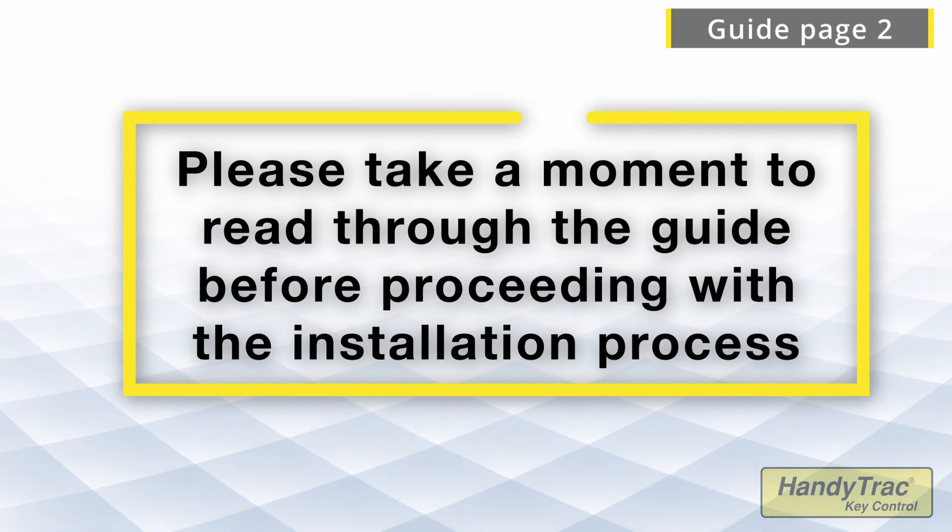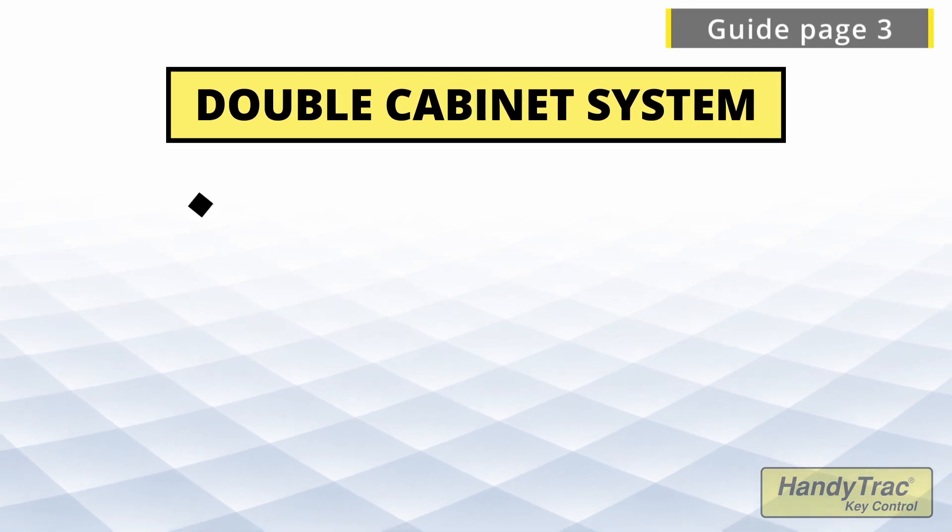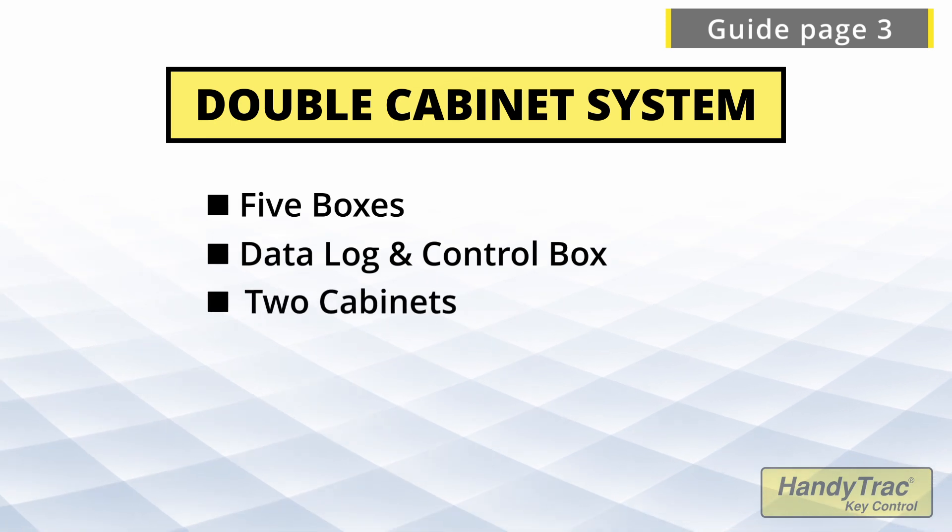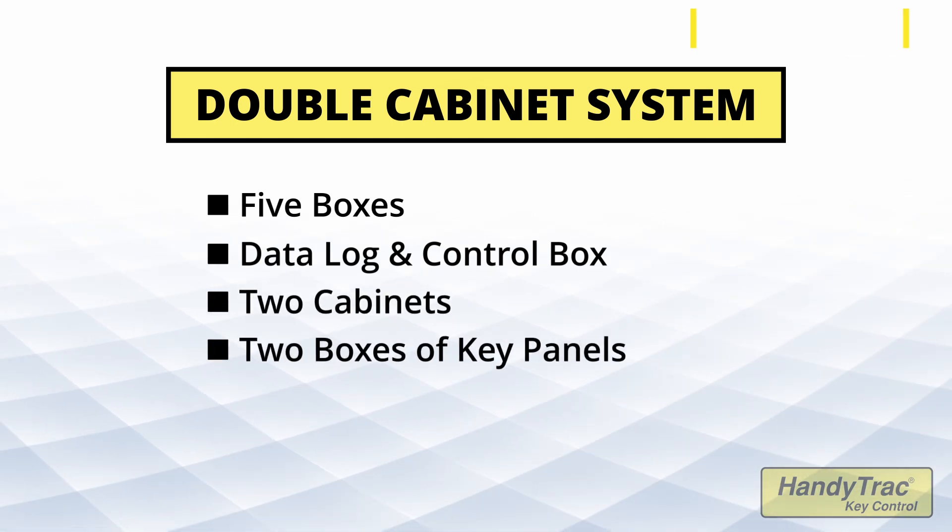Please take a moment to read through the guide before proceeding with the installation process. A double cabinet system would include five boxes: a data log and control box, your two cabinets, and your two boxes of key panels.